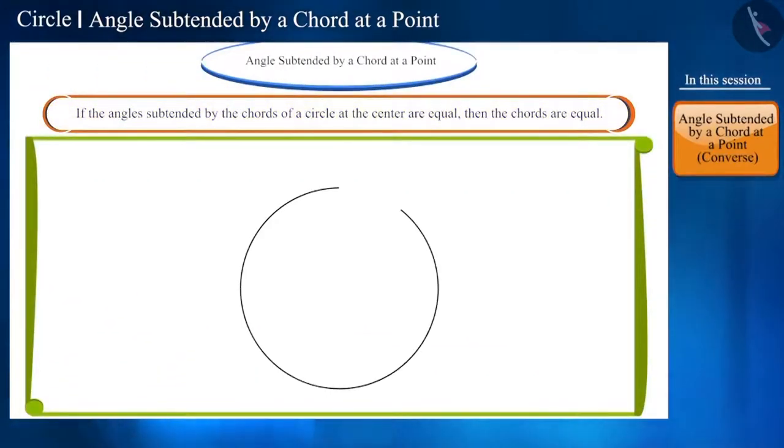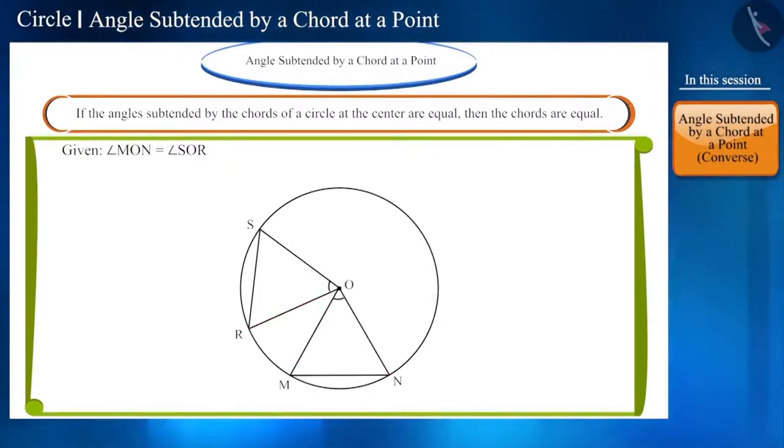Let us draw a circle whose center is O. We are given that angles MON and SOR subtended by chord MN and SR respectively at center O are equal. Now, prove that chords MN and SR are equal.